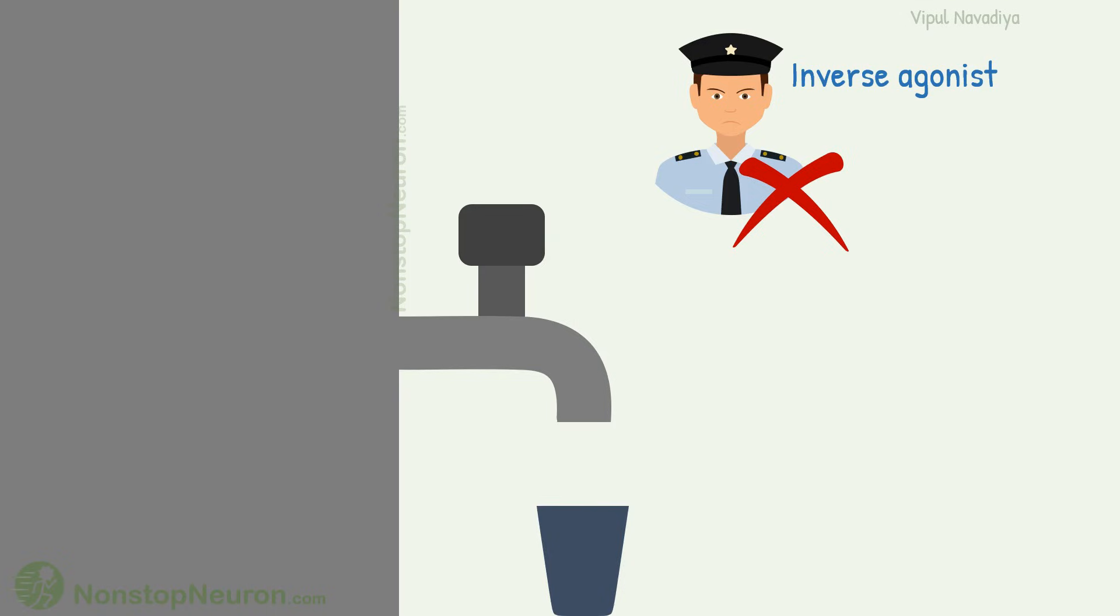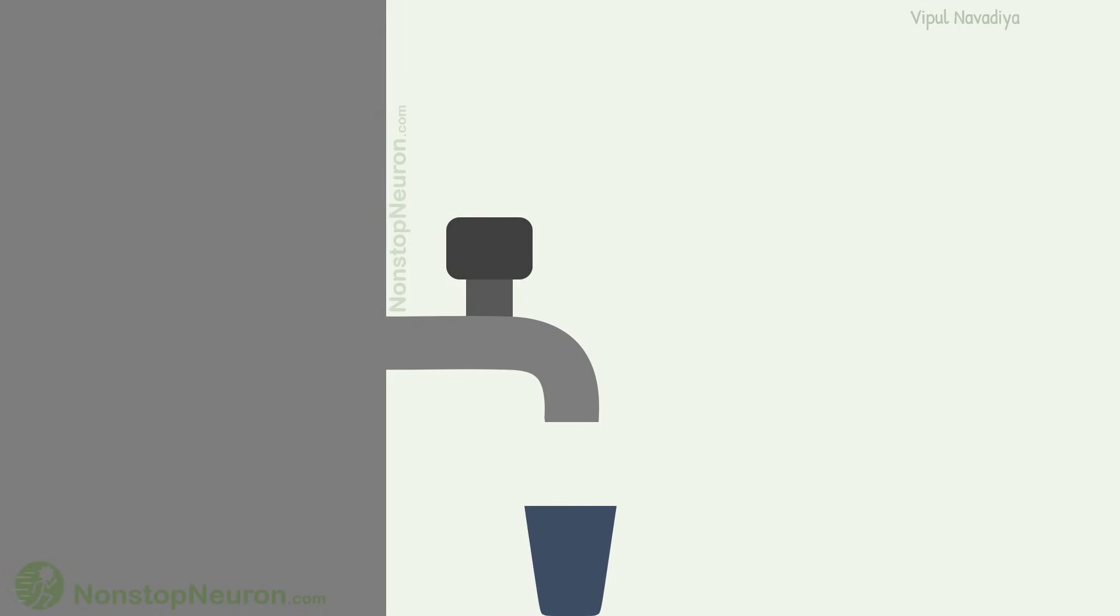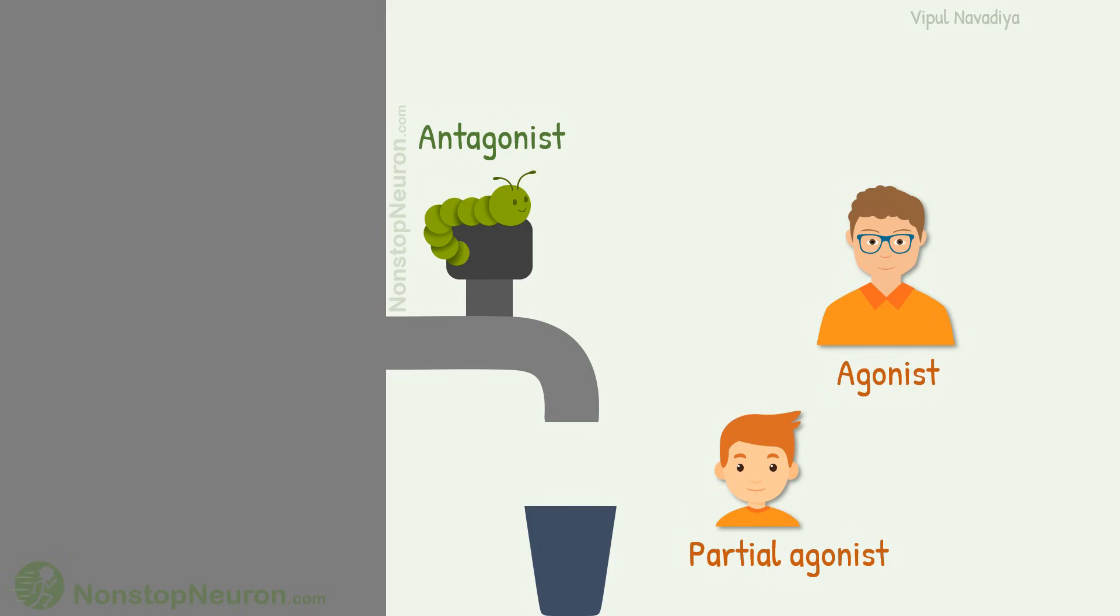So these are all the concepts. As a summary, remember, next time when you open a tap to its maximum, you are agonist. When you open it partially, you are partial agonist. If some bug is there on the tap, preventing you from doing anything with that tap, that bug is antagonist. And when you close a leaky tap, you are an inverse agonist.